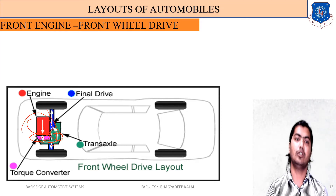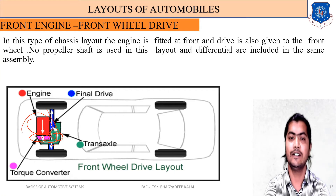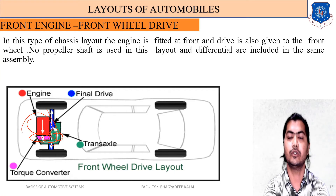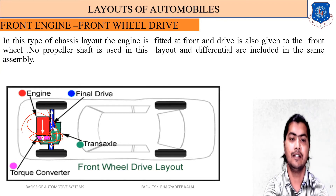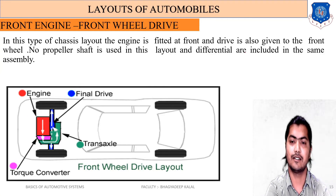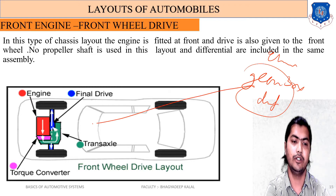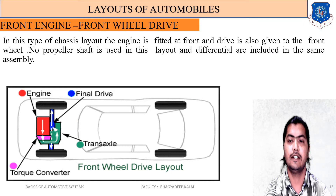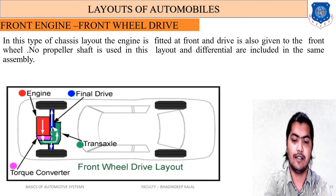The definition of this chassis layout: the engine is fitted at the front and drive is also given to the front wheels. No propeller shaft is used in this layout. The differential is included in the same assembly as the clutch and gearbox — meaning clutch, gearbox, and differential are assembled as one unit at the front axle. This combined unit is called the transaxle.